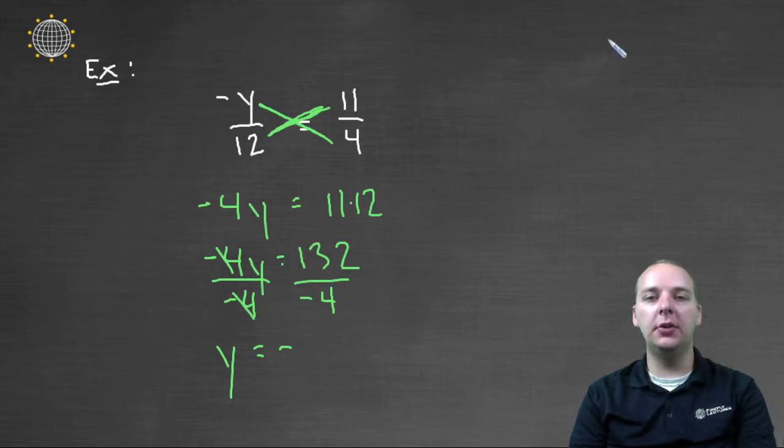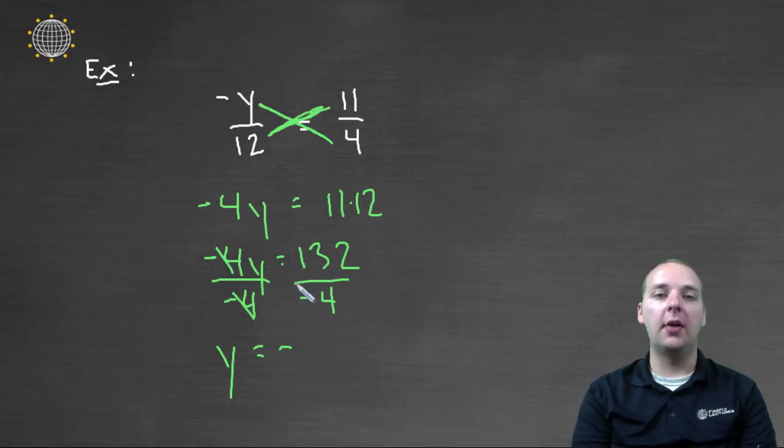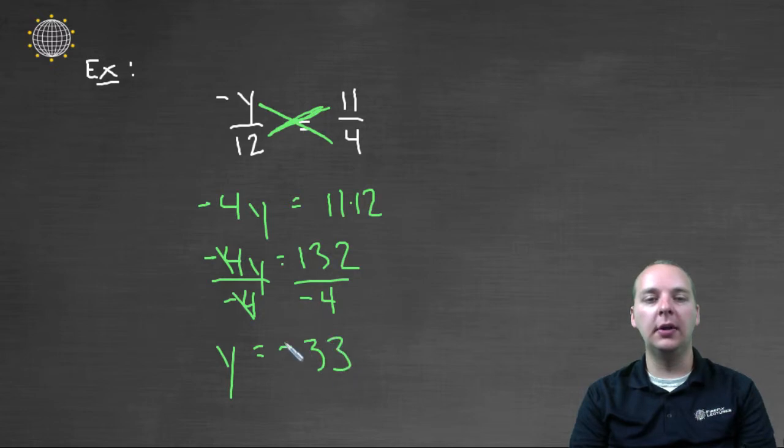And we'll get y equal to negative one hundred and thirty two divided by four. So if you need to do that with long division, you're welcome to do that on the margins of your paper, or if you need to use a calculator you can do that as well, but I believe this is going to be thirty-three. So the y will be negative thirty-three.